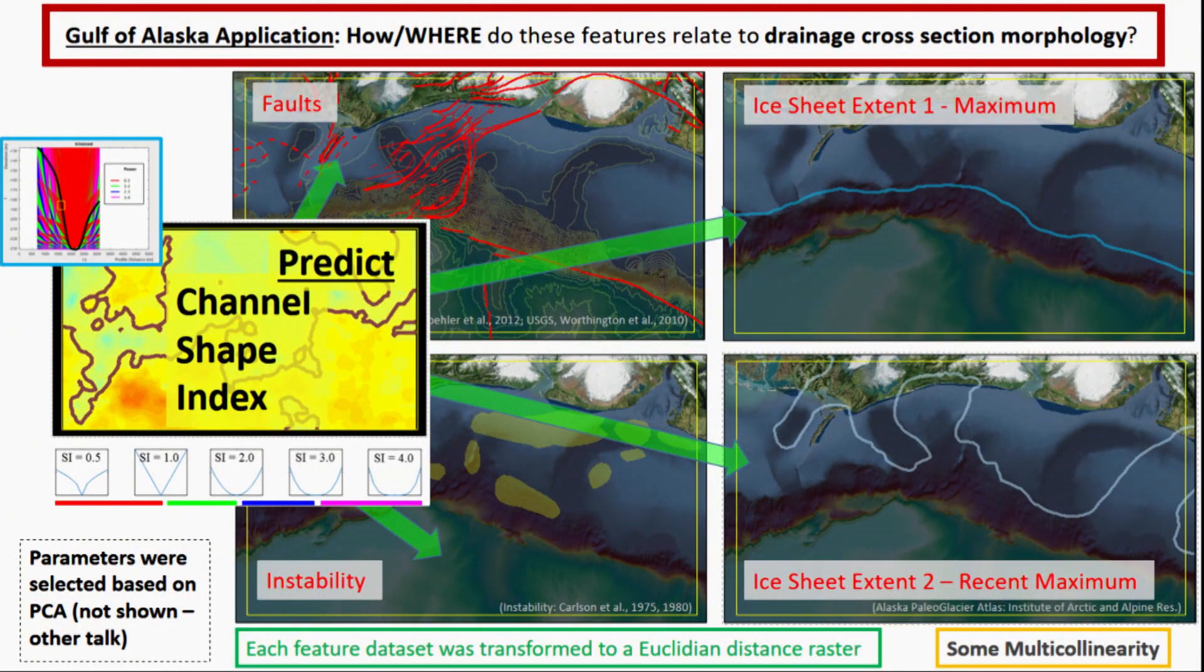Our specific application is in the Gulf of Alaska, where we're trying to predict the channel shape index, which is what it looks like in cross-section. Is it more U-shaped or more V-shaped? We selected four parameters based on a principal component analysis, which I don't have time to discuss today. But we selected faults, instability, and two different ice sheet extents as a way of predicting the shape index.